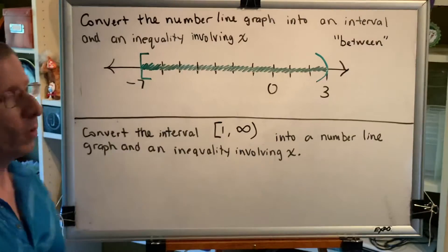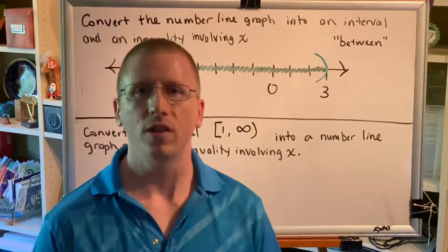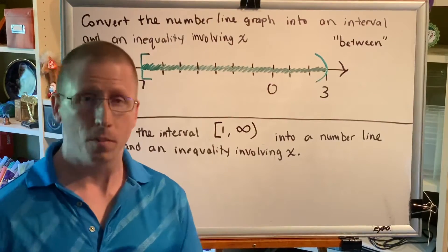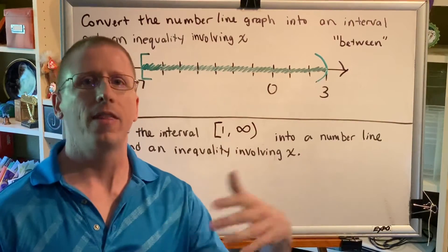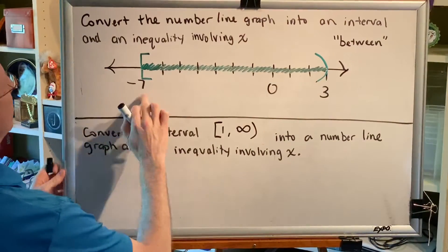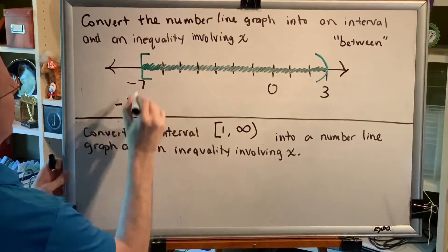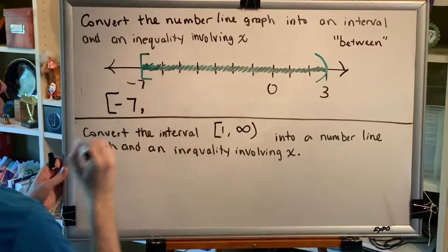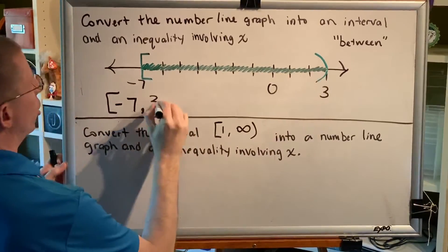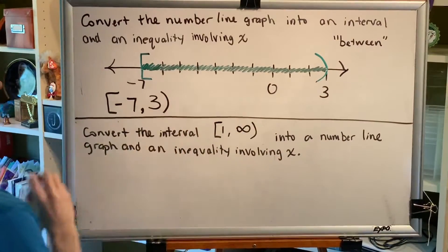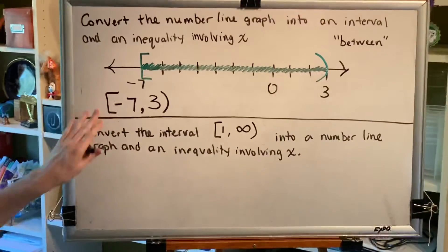This is actually very easy. Remember that an interval always goes from smallest to largest, which means on a number line we're looking for the leftmost shaded number, then the rightmost shaded number. The leftmost shaded number is negative seven. Negative seven has a bracket symbol on the number line, so we put a bracket in our interval. The rightmost shaded number is three. There is a parenthesis symbol at three, so we put a parenthesis in our interval.